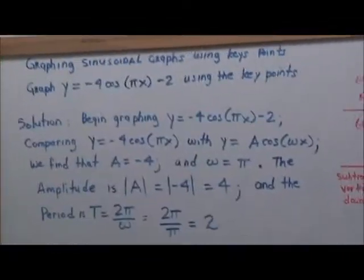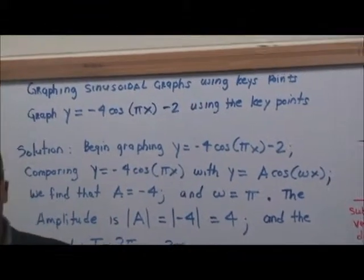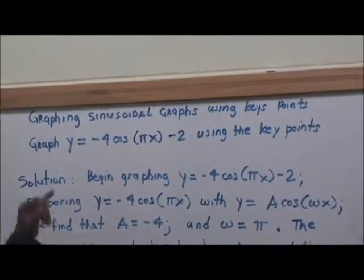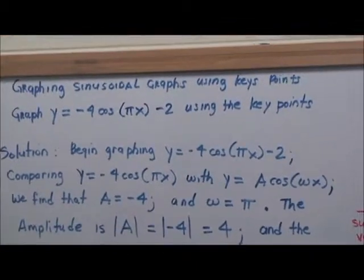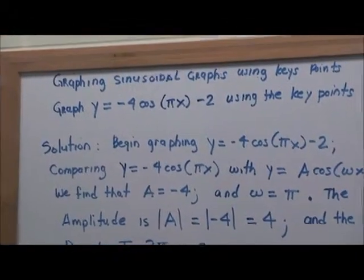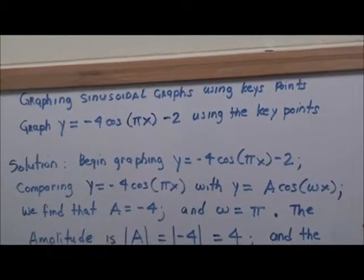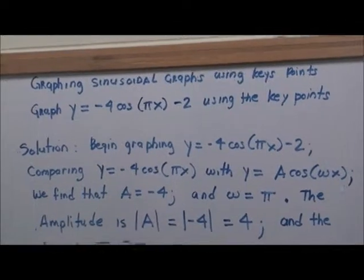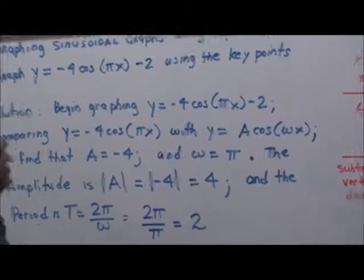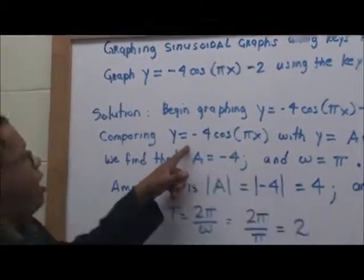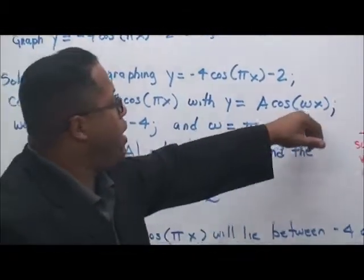This time we're going to graph a cosine function. We want to graph y equals negative 4 cosine of pi times x minus 2. There's something very significant about that — it's going to be a vertical shift. We begin by comparing y equals negative 4 cosine of pi times x with y equals a times cosine of omega times x.